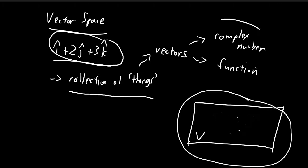I will use the set of all complex numbers as an example to illustrate the ideas. The set of all complex numbers is indeed a vector space, and each individual complex number is a vector from this vector space. This is a good example for illustrating some of the more abstract ideas behind vector spaces.